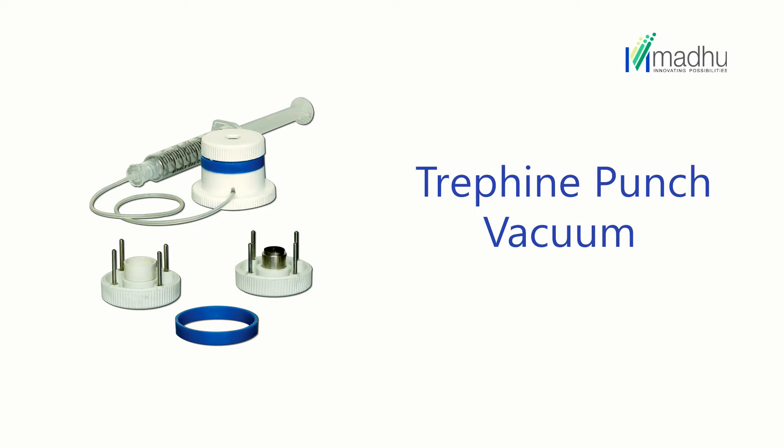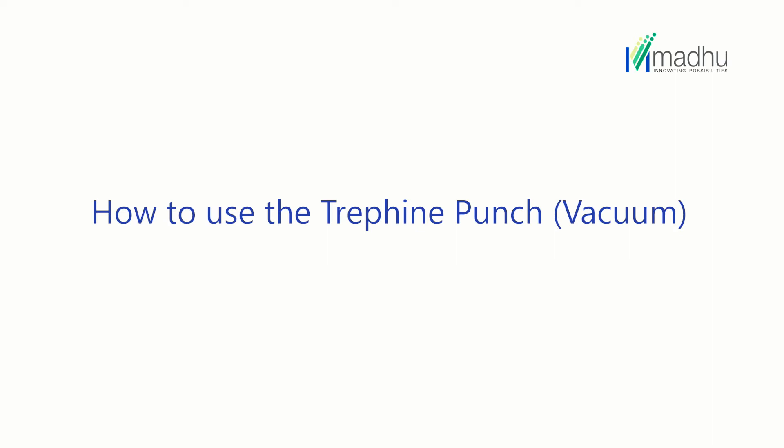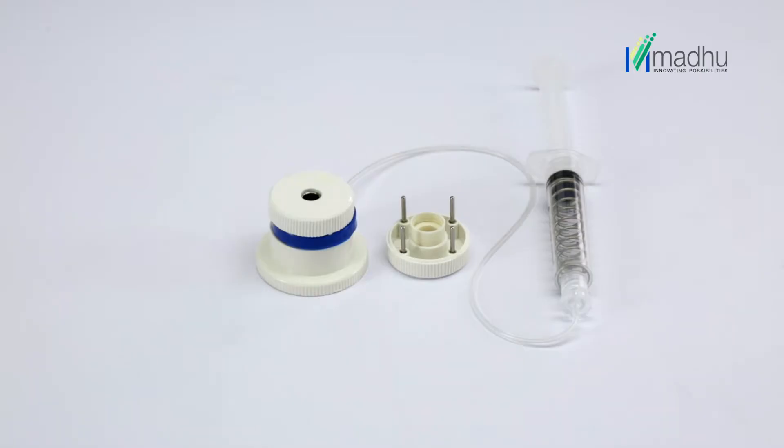The vacuum trephine punch is designed to take out a circular corneal button of predetermined diameter from the donor cornea. This device uses vacuum to hold the donor cornea in place before cutting the corneal button.